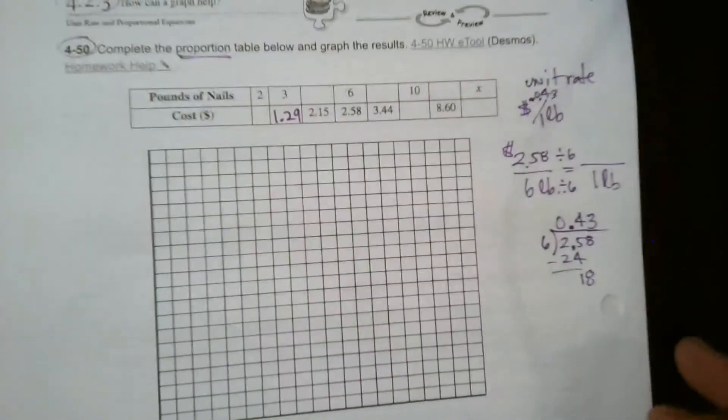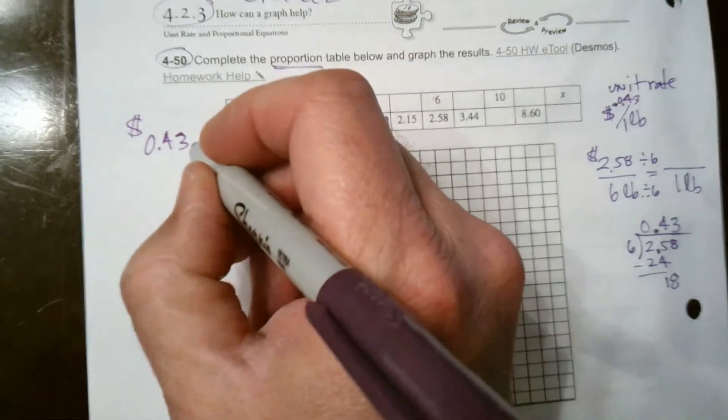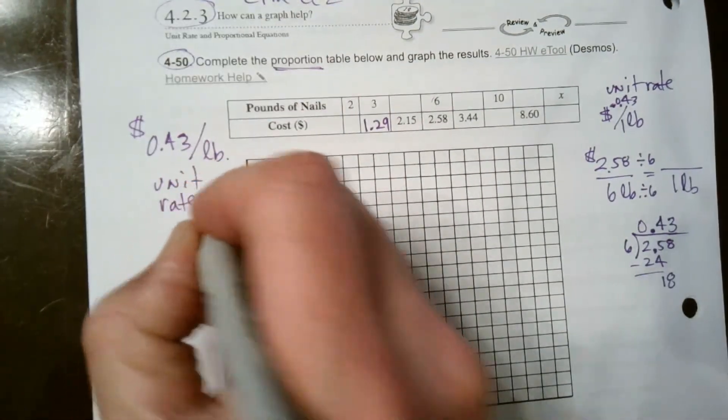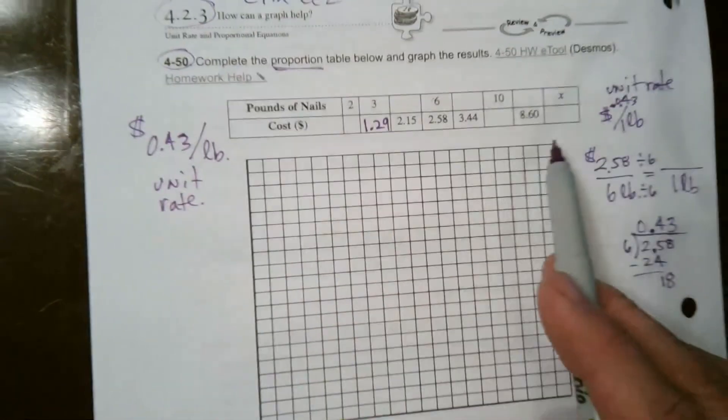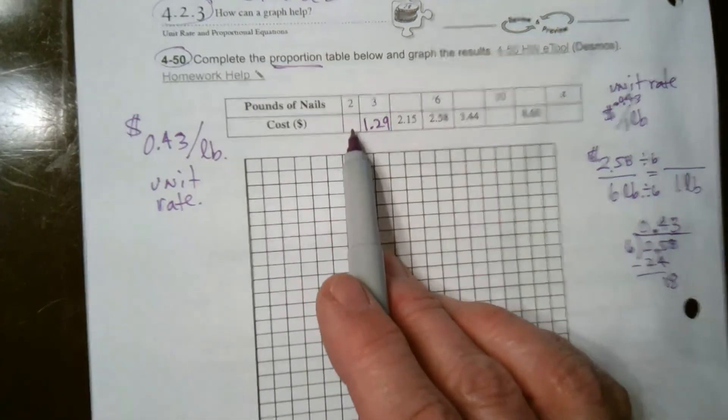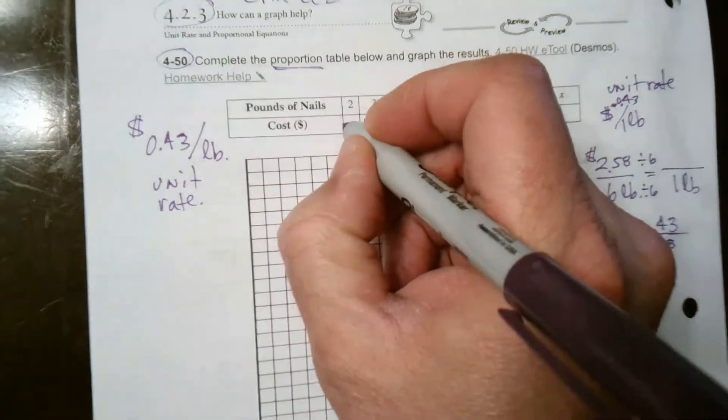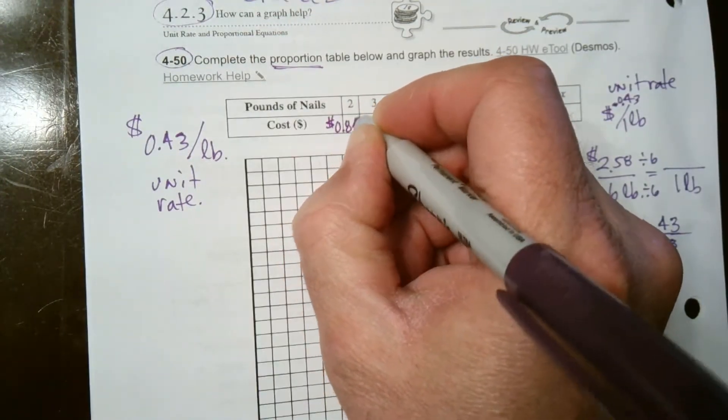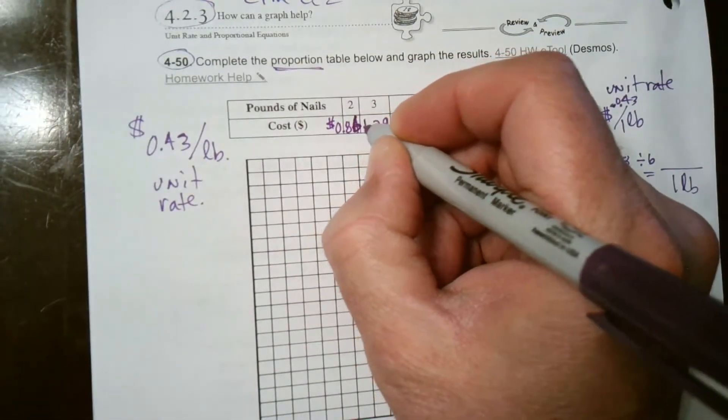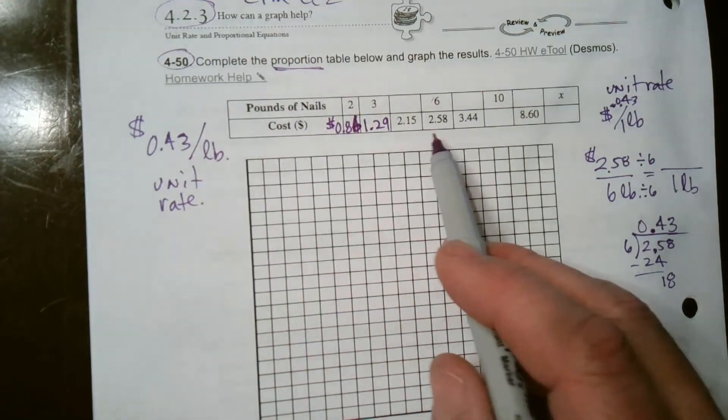That's going to be helpful for me to complete this table because if it's 43 cents per pound, now I've just got to look at what would it be for two pounds? For two pounds, it would just be multiply that. What is two times 43 cents? Well, that happens to be 86 cents. Two times 43 is 86.